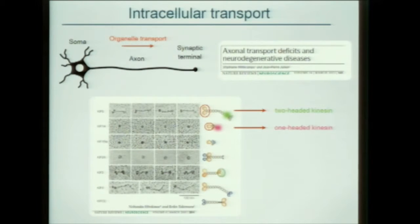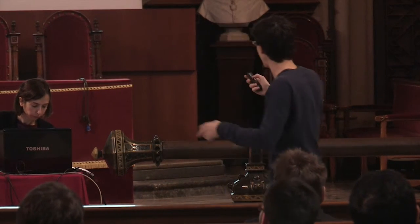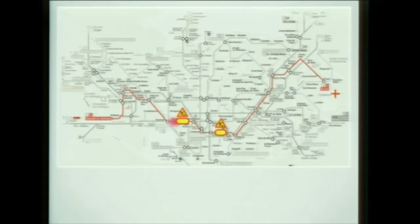Let's try to answer: how do kinesins behave in front of obstacles? In our in vitro system, we pick one lane, one polarity, and put some obstacles along the way. The red spot — the two-headed kinesin — runs until it finds the obstacle and stops. The green spot — the single-headed kinesin — seems to somehow avoid the obstacle.